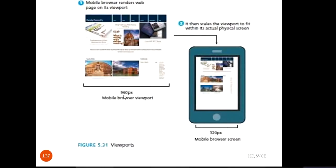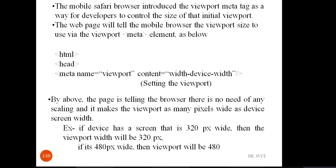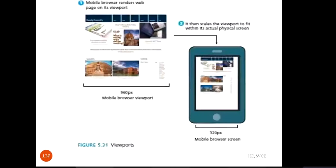The content width is fixed at 960 pixels. When the device or media is of size 920, it should automatically shrink the content. This is how you make your web browser responsive. This is done using a viewport — that is, using meta tags — and there is a syntax for that.